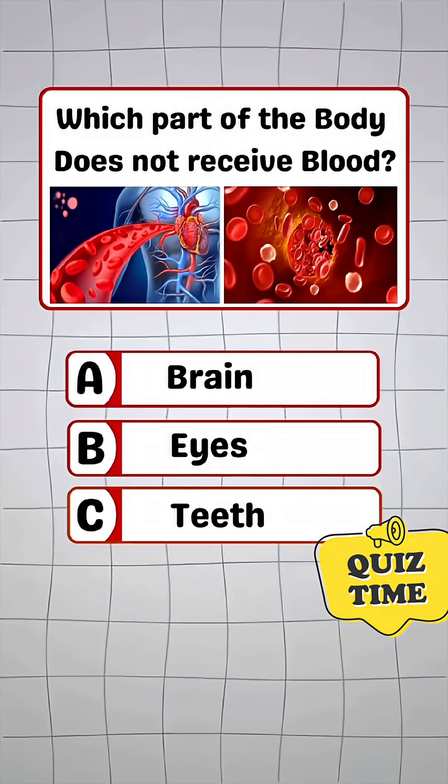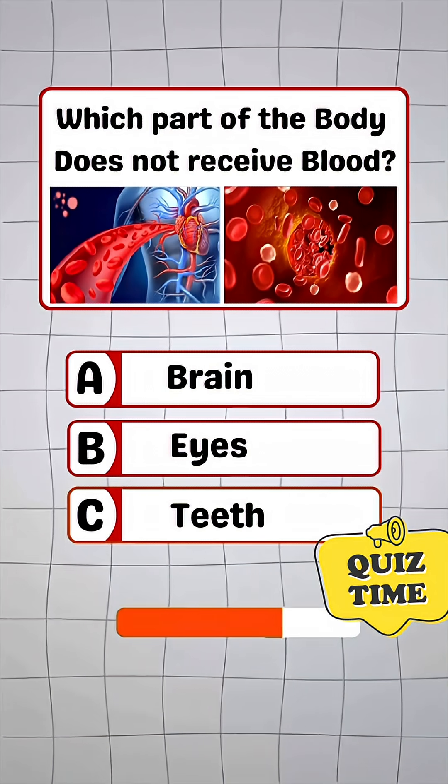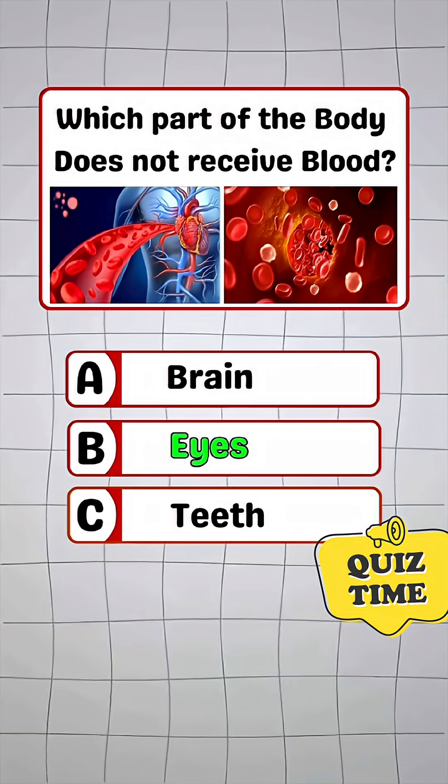Which part of the body does not receive blood? Answer B. Eyes.